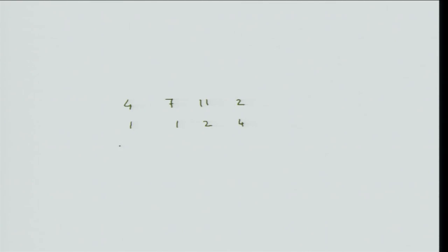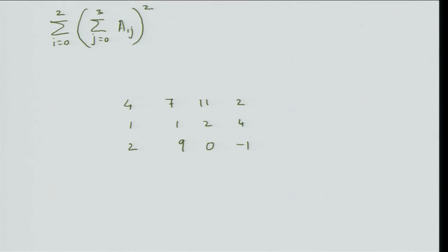How do we do this by hand? We have the matrix entries: row 0 contains 4, 7, 11, 2; row 1 contains 1, 1, 2, 4; and row 2 contains 2, 9, 0, minus 1. The formula we have to calculate is: i going from 0 to 2, j going from 0 to 3, sum of a[i][j], and then squared.